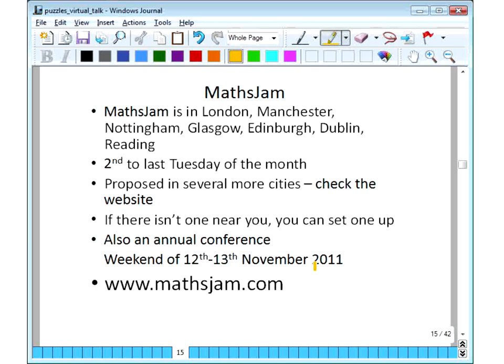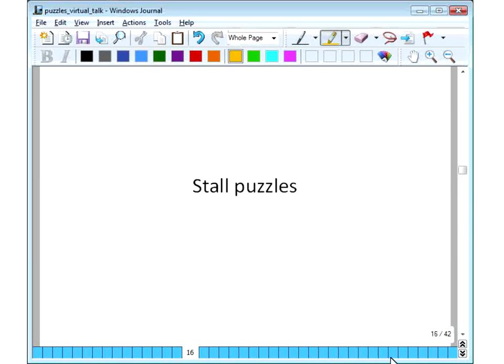Right. So a little reminder that MathsJam is in these cities. It's always the second to last Tuesday of the month, everywhere. And there is proposed in several more cities to check the website and shout if you are interested in that sort of thing. If there isn't one near you, you can set one up. It's not too difficult, really. There's also an annual MathsJam conference, which happened for the first time last year, and they're going to repeat. This is on the weekend of the 12th and 13th of November 2011. And it is somewhere, I want to say, somewhere near Crewe, I think. But anyway, you can get the details from MathsJam.com. The weekend was a lot of fun. It was lots of short, five-minute talks of people showing puzzles and things that they found interesting. So they had the same sort of ethos, but it was very nice. Sharnbrook Keel, I'm not sure. You can go to MathsJam.com and look that up. I'm not sure.